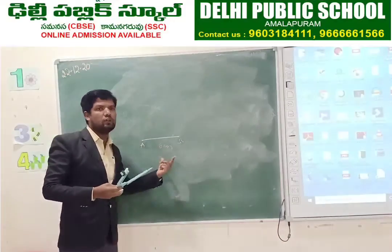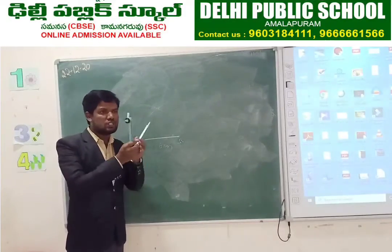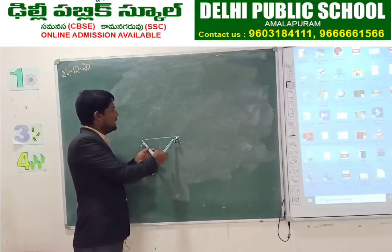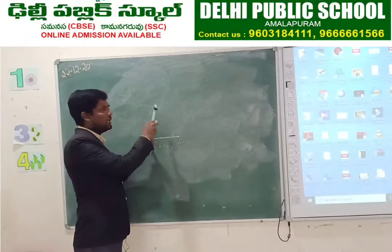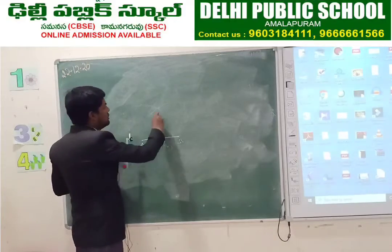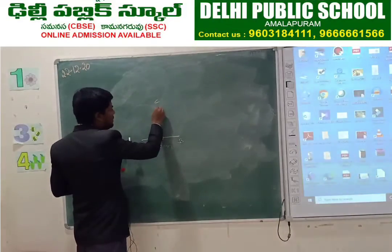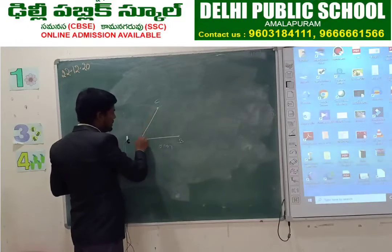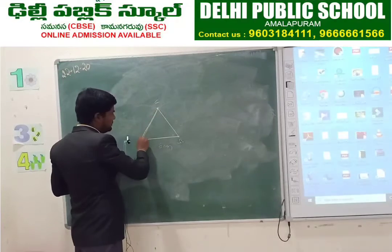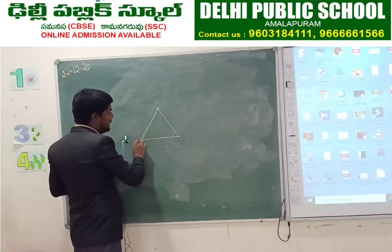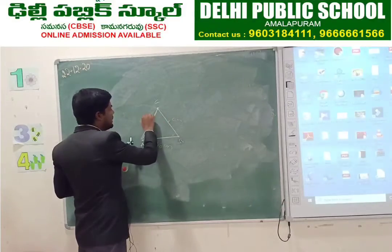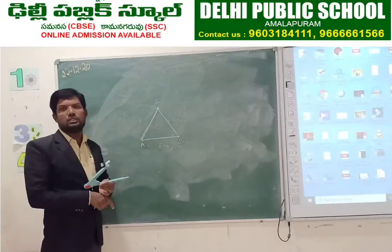AB we have taken as 6 centimetres. With the same measurement using the compass, put a pointer on A, measure A to B, and draw an arc from A and from B so they intersect each other. That intersection point is C. Join AC and BC. If you measure, each side will be 6 centimetres.